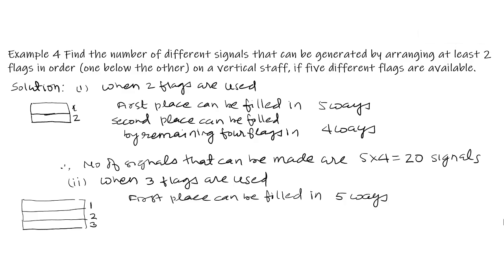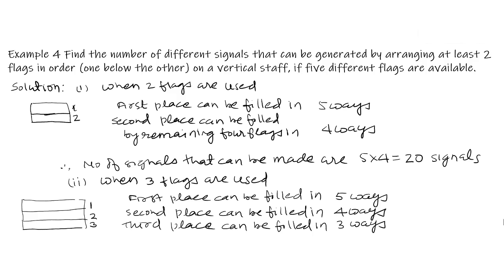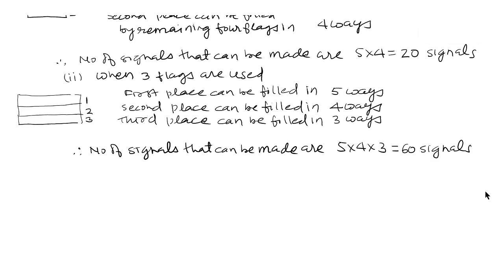Part 2 — when three flags are used: The first place can be filled in 5 ways by using any of the five flags. The second place can be filled by any of the remaining four flags in 4 ways. The third place can be filled by any of the remaining three flags in 3 ways. Therefore, by the fundamental principle of multiplication, the number of signals are 5 × 4 × 3 = 60 signals.